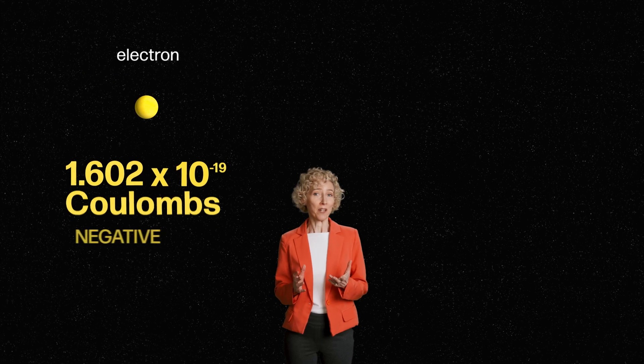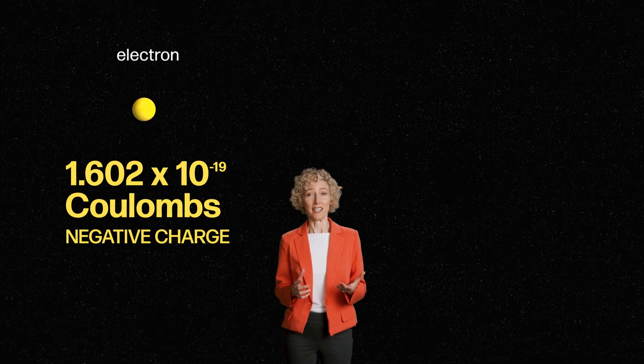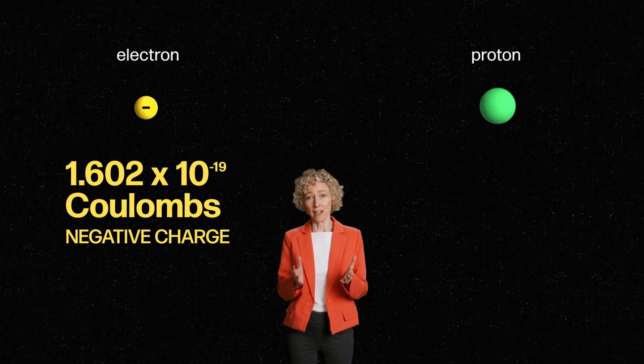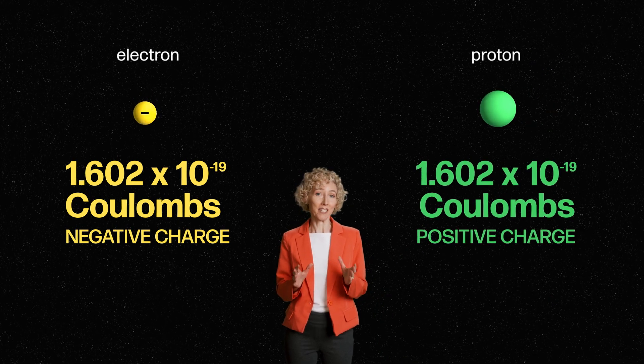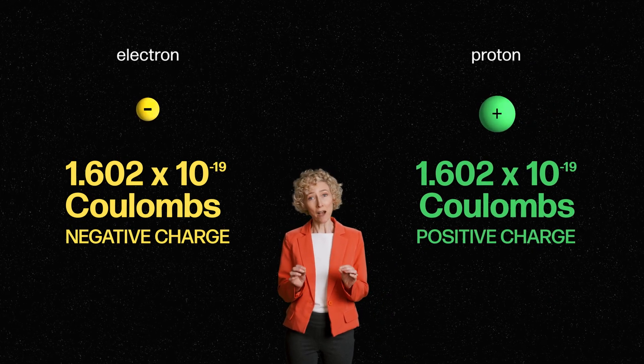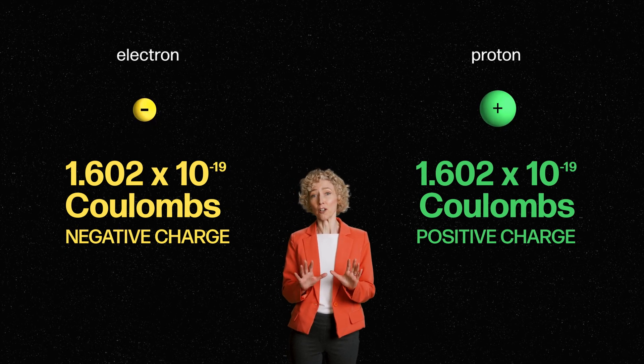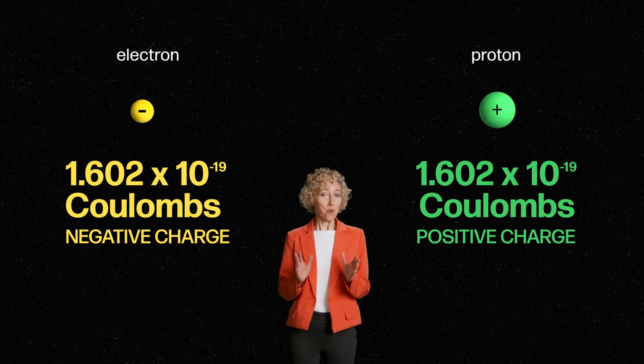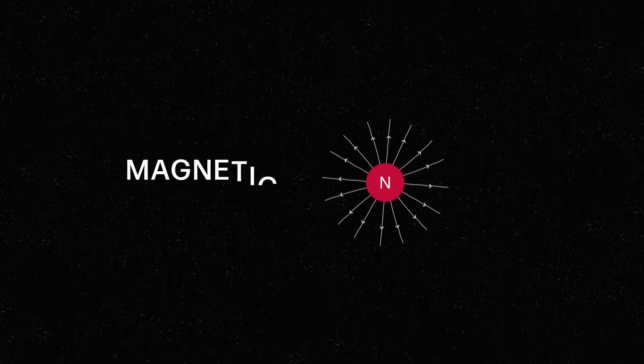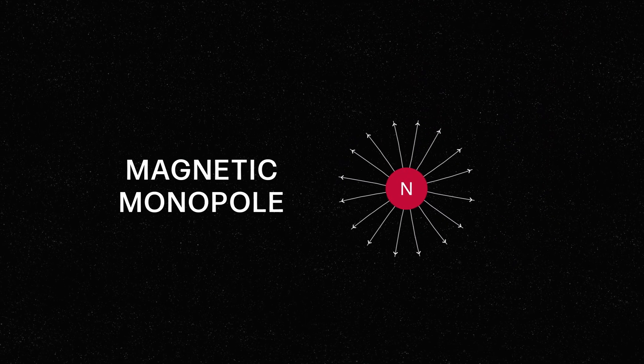For example, every time we find charge on an isolated fundamental particle, it's always by the same amount. The electron has 1.602 times 10 to the minus 19 coulombs of negative charge. A proton has 1.602 times 10 to the minus 19 coulombs of positive charge. And the same thing for every isolated fundamental particle we've ever found. Why this happens is a mystery. But the existence of even one magnetic monopole anywhere in the universe would explain it.